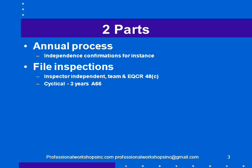File inspections are to be done on a cyclical basis. A66 suggests a three-year cycle. Some people have interpreted that to mean they're going to wait three years and then do a bunch of file inspections. I don't think that qualifies as a cyclical basis. I think it means that every year you do some file inspections, and over three years you'd make sure you'd covered every partner in the firm.